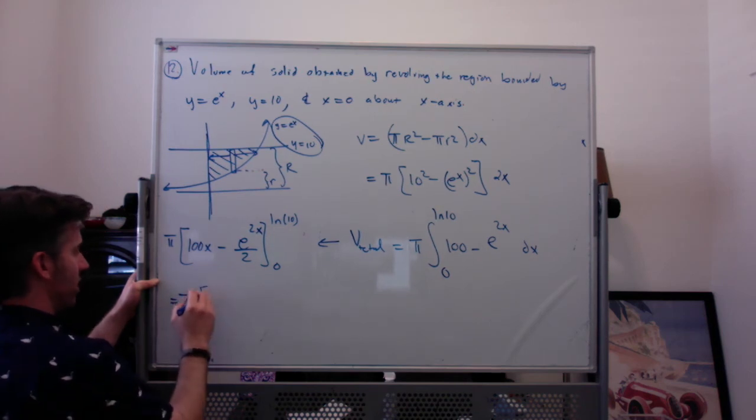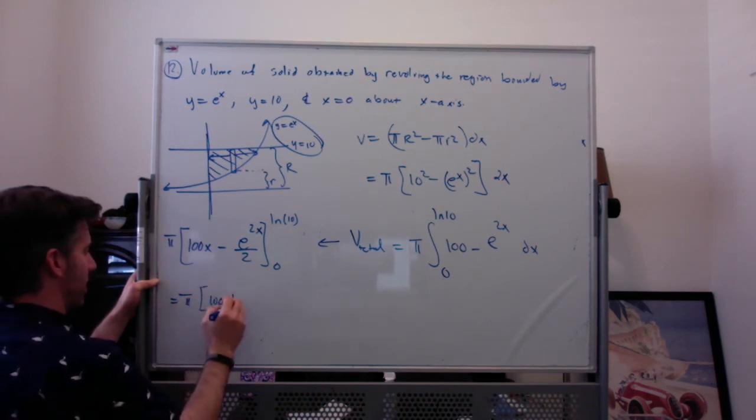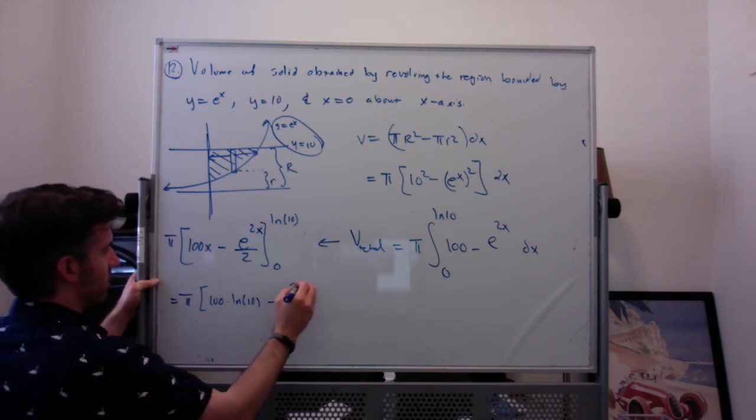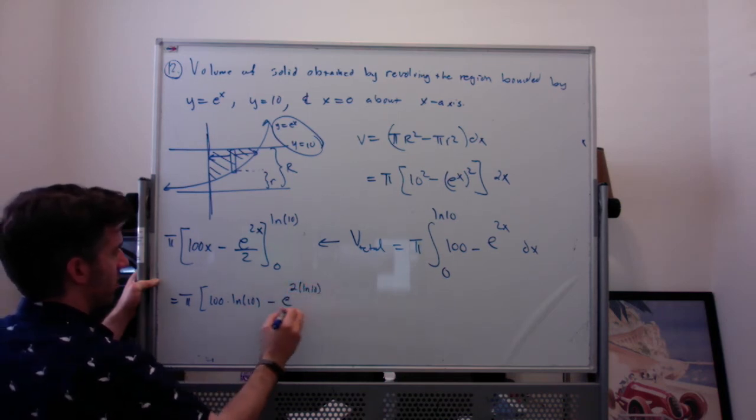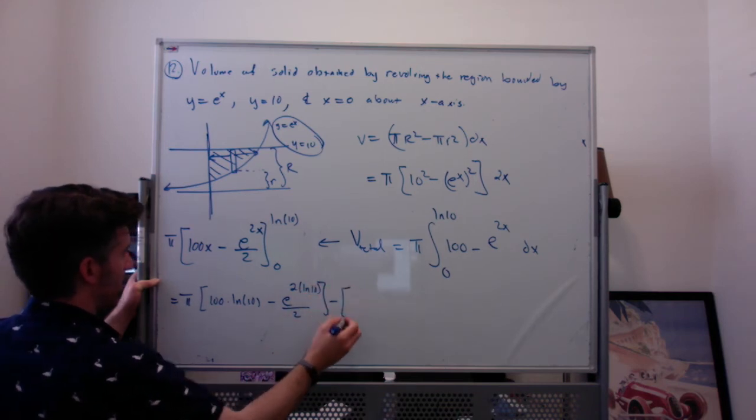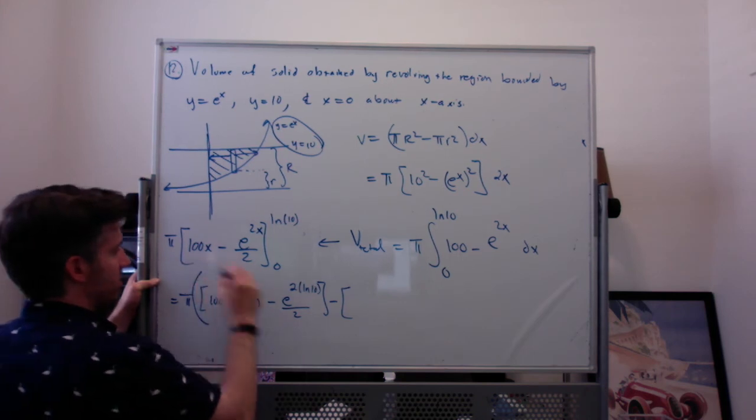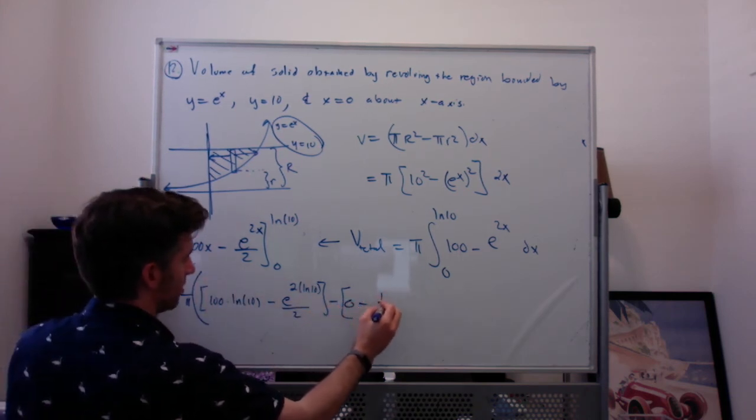Plugging in natural log of 10, we get 100 times natural log of 10 minus e to the 2 natural log of 10 over 2, minus—plugging in 0, I get 100 times 0 is 0 minus e to the 0 is 1.